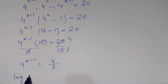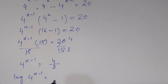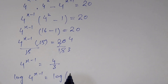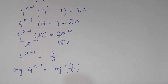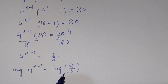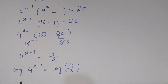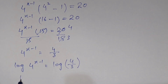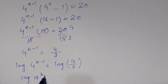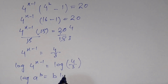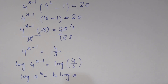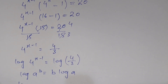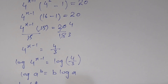We will take log on both sides: log of 4^(x-1) equals log of 4/3. Now we will use two formulas — one for the left side and one for the right side. For the left side: log of a^b equals b times log of a.